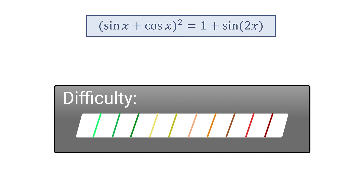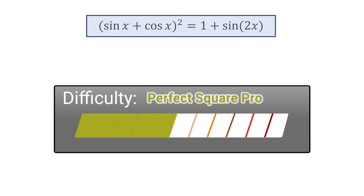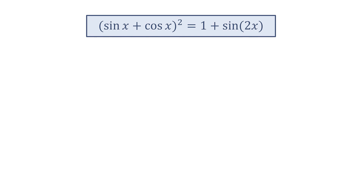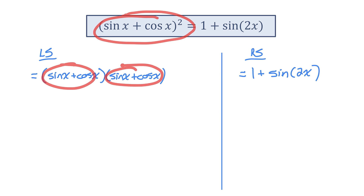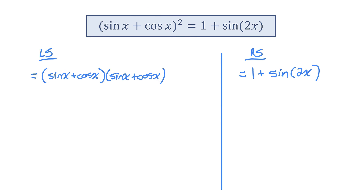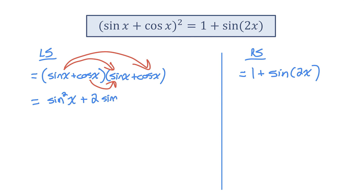Identity number five. I'll separate into left side and right side. Notice I rewrote sine x plus cos x squared as sine x plus cos x times another sine x plus cos x — that's what squaring means. Now I'm going to expand the left side. My first product is sine squared x, my next product will be sine x cos x, and again sine x cos x — I'll combine those to say there are two sine x cos x. And the last product is cos times cos, which is cosine squared x.